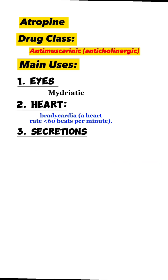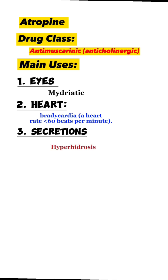The third use of atropine: secretions. Atropine's actions on the parasympathetic nervous system inhibit salivary and mucous glands. The drug may also inhibit sweating via the sympathetic nervous system, which can be useful in treating hyperhidrosis.